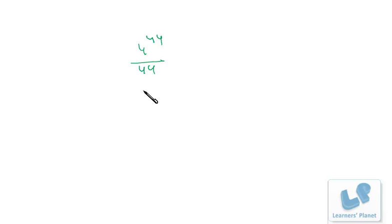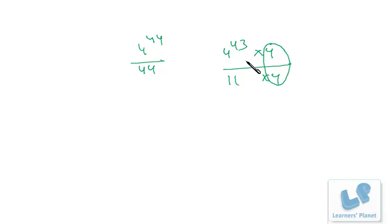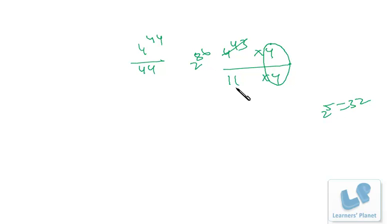Similarly: 4 raised to 44 divided by 44 — what is the remainder? We write 4^44 = 4^43 × 4 and 44 = 11 × 4, taking 4 as the common factor. Now we need 4^43 divided by 11. We can write 4^43 = 2^86 = 2^85 × 2, since 2^5 = 32 and 11 × 3 = 33 gives us a useful nearby number.